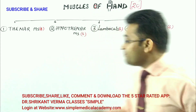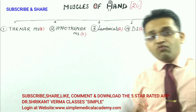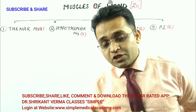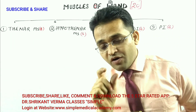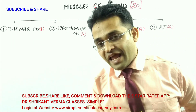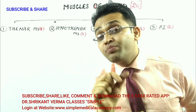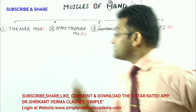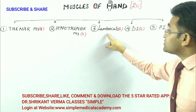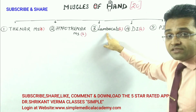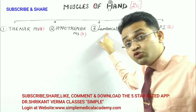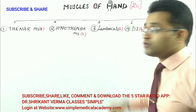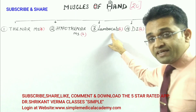Along with our hand, there are 4 worm-like muscles. In parasitology and microbiology, Ascaris lumbricoides is a worm-like organism. Similarly, these muscles resemble Ascaris lumbricoides — that's why they are known as lumbricals. They are also 4 in number.